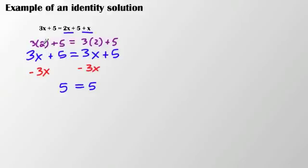Whether it's 2, whether it's 8, whether it's 10, whether it's negative 5.5, whatever number I plug in for x will always make this a true statement. So that means that it's an identity solution.